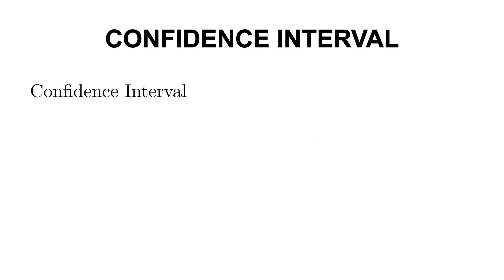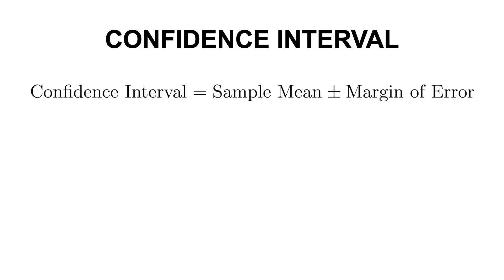Now, how do you calculate a confidence interval? Well, you start with your sample statistic, let's say it's the mean, and then you figure out the margin of error, which is essentially the wiggle room around your estimate. And the margin of error depends on two things.